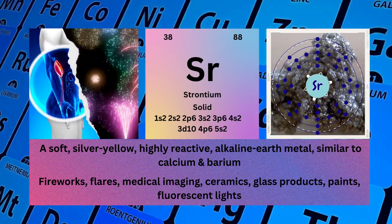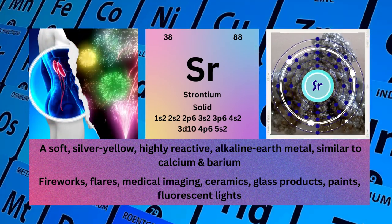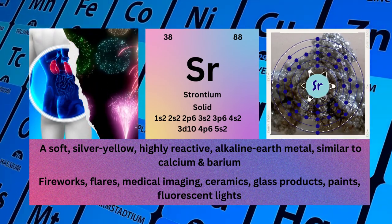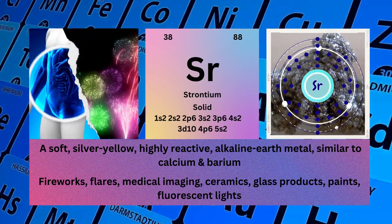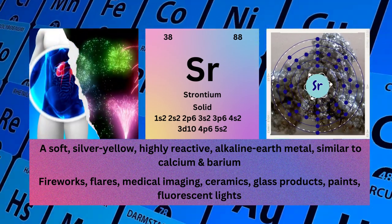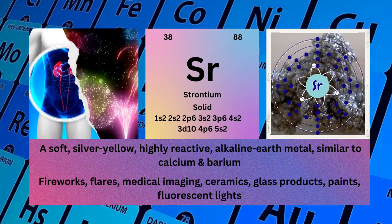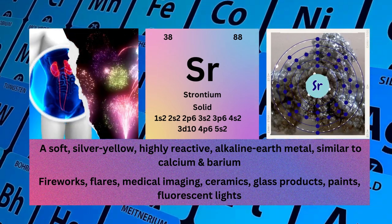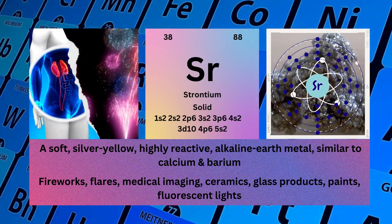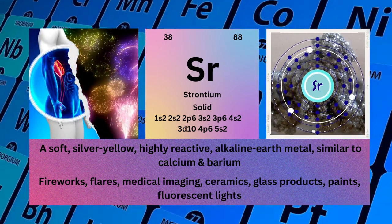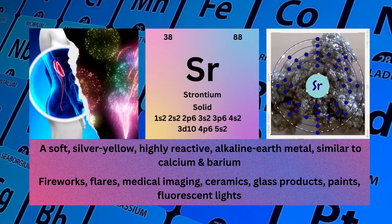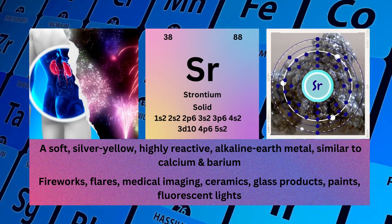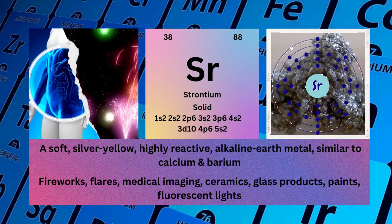Physical properties: a soft, silver-yellow, highly reactive alkaline earth metal, similar to calcium and barium. Strontium used for fireworks, flares, medical imaging, ceramics, glass products, paints, and fluorescent lights.